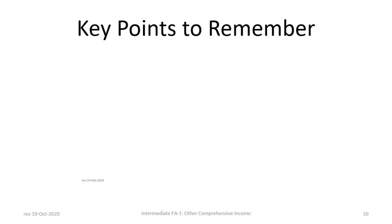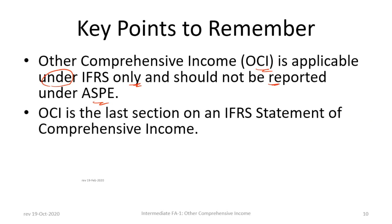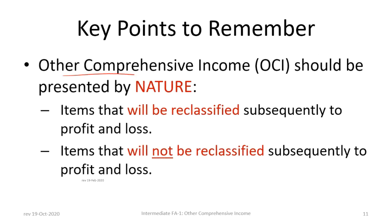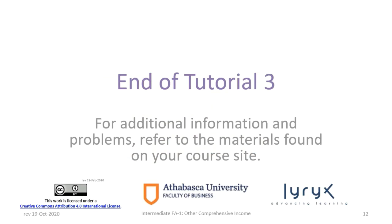Let's review some key points to remember. First, OCI is applicable only under IFRS and should not be reported under ASPE. Second, OCI is the last section on an IFRS Statement of Comprehensive Income, coming after net income and discontinued operations. Third, single and two statement options are both possible, with net income being the starting point for each. Finally, other comprehensive income should be presented by nature: items that will be reclassified subsequently to profit and loss, or items that will not be reclassified subsequently to profit and loss. This concludes Tutorial 3 on Other Comprehensive Income.